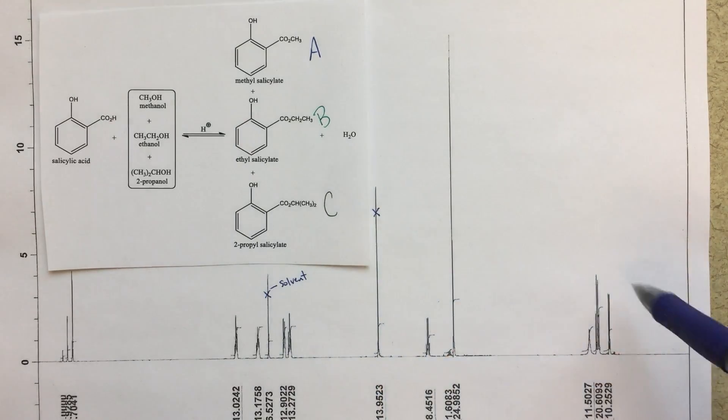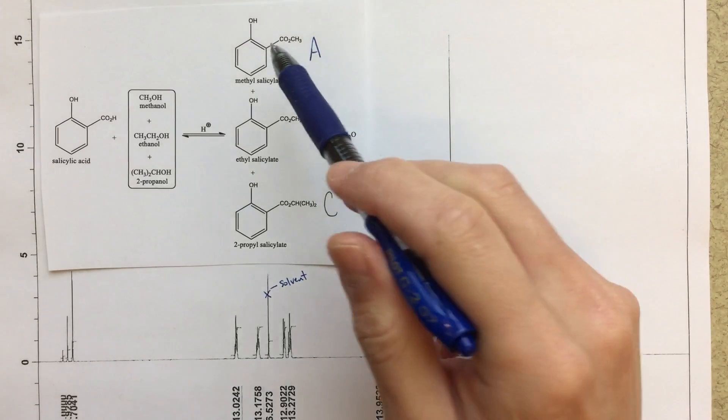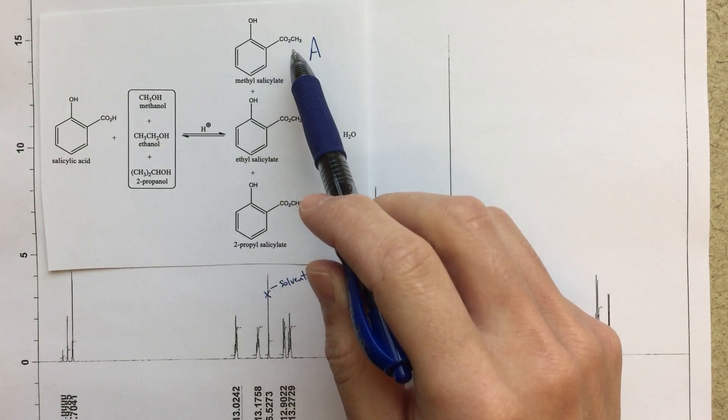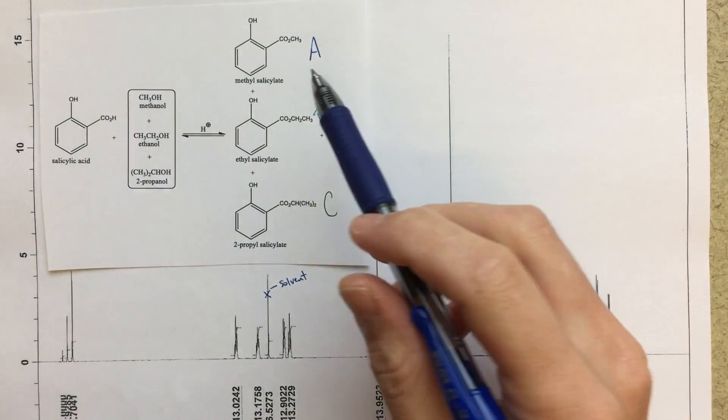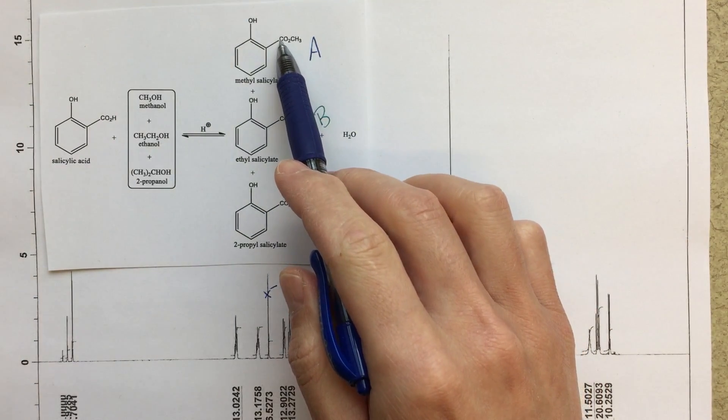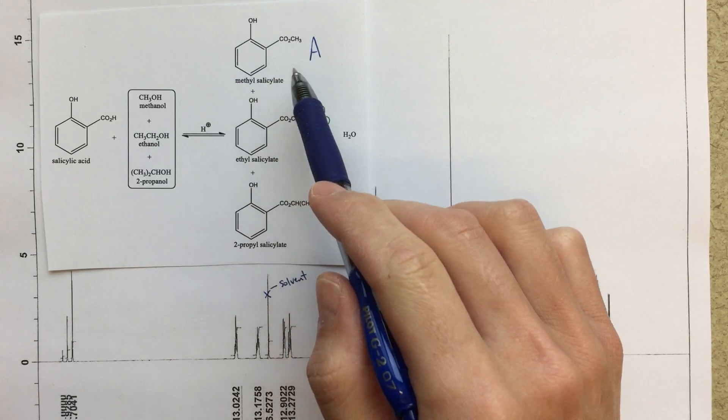But first we would need to figure out which one is A, B, and C. Now looking at this other region, I can start picking things out. And the first thing that I might look at is, well, in A I should have a methyl group. I should have a three-high group that is a singlet. So this CH3 bonded to C, so this is an ester, C double bond O bonded to O, and then this methyl group.